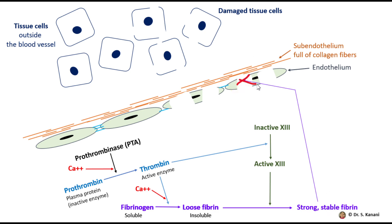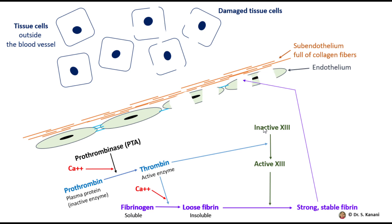These strong and stable fibrin molecules form a network which is the foundation of the blood clot. When blood is pushed out, cells get trapped in this network, and eventually the blood clot loses its extra plasma and becomes completely solid. This is a short summary of the common pathway — it starts with prothrombinase and ends with the formation of the fibrin molecules we need.